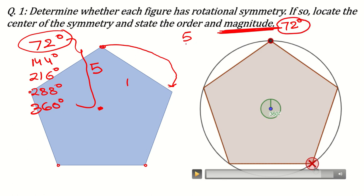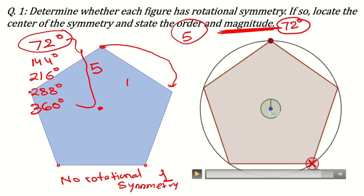The order is 5 and the magnitude is 72°. One important thing to understand: if the order of any regular figure is 1, it means the figure only returns to its original position at 360° and does not overlap at any other angle. In that case, there is no rotational symmetry. Order of 1 means the figure overlaps itself only once in a full circle, so there is no rotational symmetry.